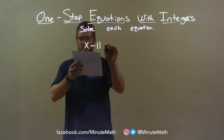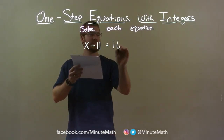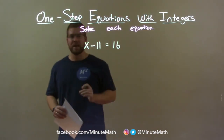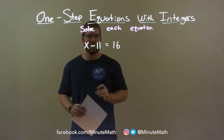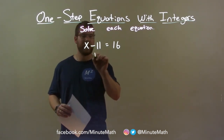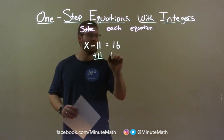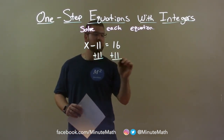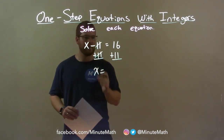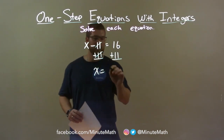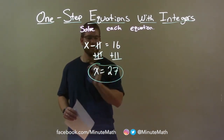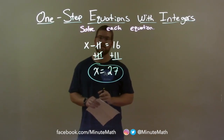x minus 11 equals 16. I want to get x by itself. We have subtract 11 right next to it. To get x by itself, I do the opposite of subtraction — addition. I add 11 to both sides. This gives me x by itself because the 11s cancel. And now I have 16 plus 11, which is 27. So my final answer is x equals 27.